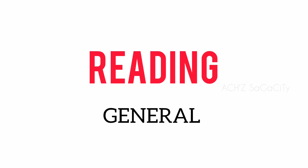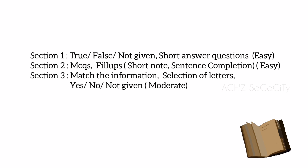Moving on to the reading module of the general module. In Section 1, you can expect 2 short passages. You will get questions in the form of true, false, not given along with short answer questions — short answer meaning you can fill up to 3 words. This part will be an easy one. Moving on to Section 2, you can expect again 2 short passages. The questions will be in the form of multiple choice questions and also fill-ups — 2 sets of fill-ups: one in the form of short notes, the other as sentence completion. This section will be an easy one.